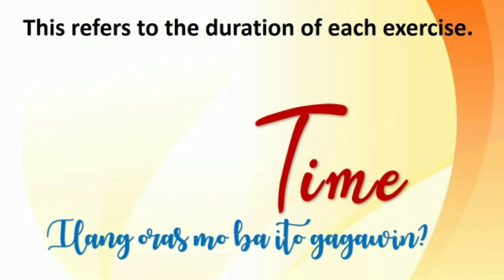T stands for time. This refers to the duration of each exercise — how many minutes or hours you do your exercise for every session. Experts recommend at least 150 minutes of moderate intensity exercise or at least 75 minutes of high intensity exercise a week. This can look like 30 minutes for moderate exercise or 50 minutes of intense exercise a day.